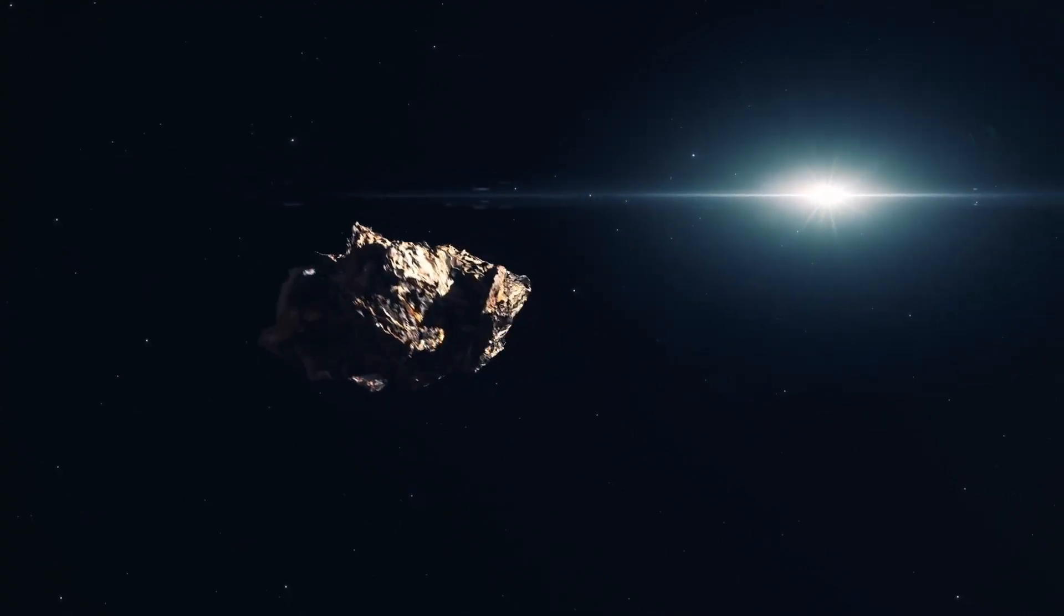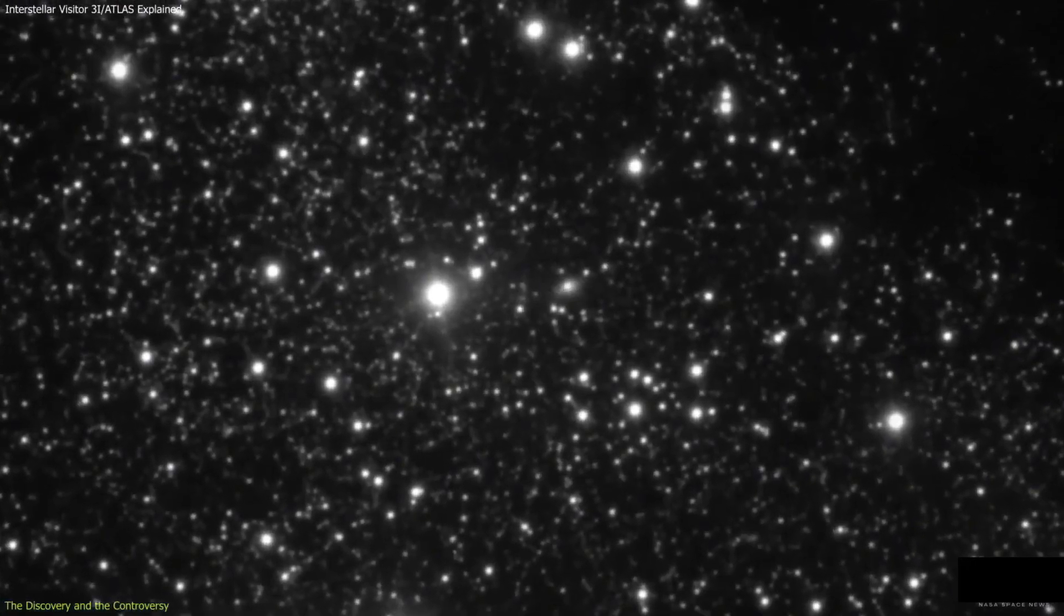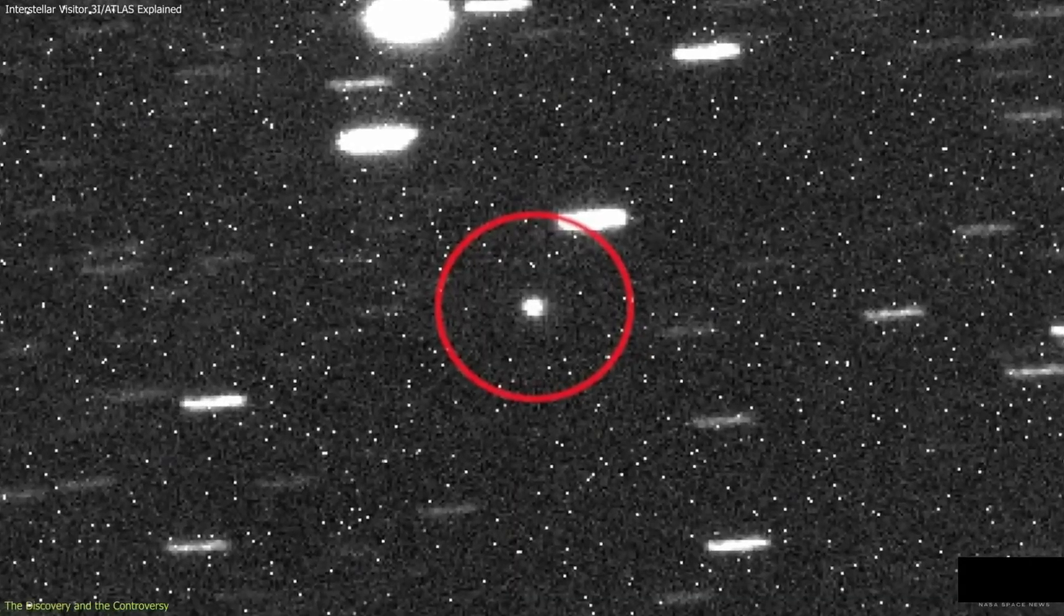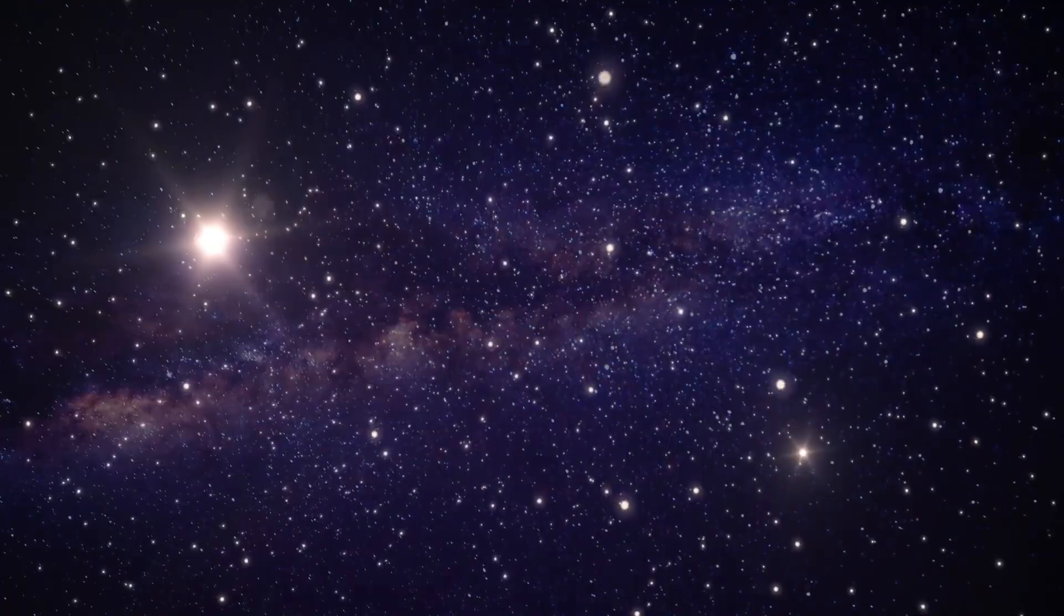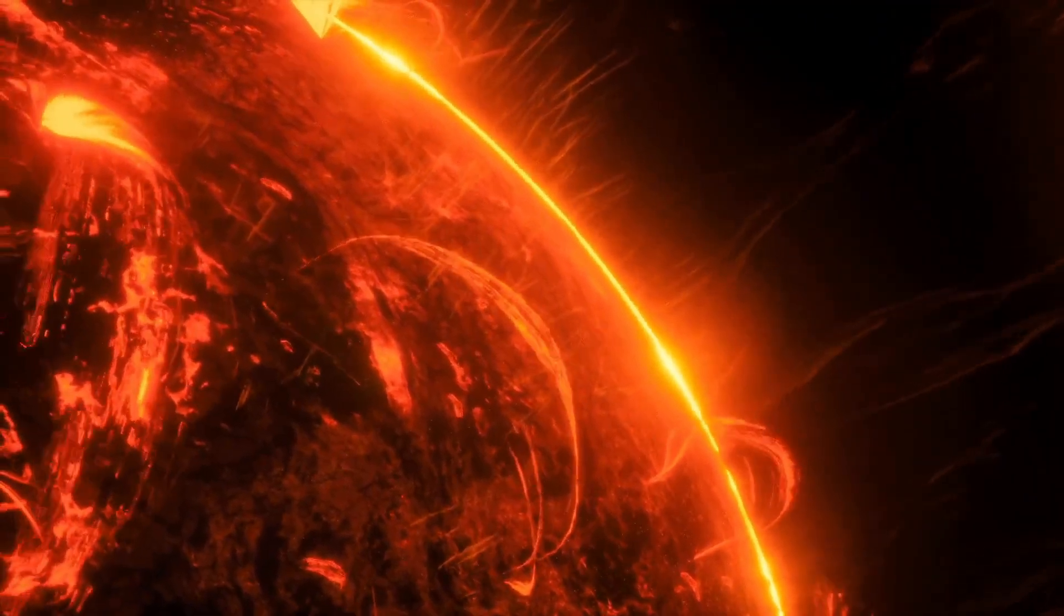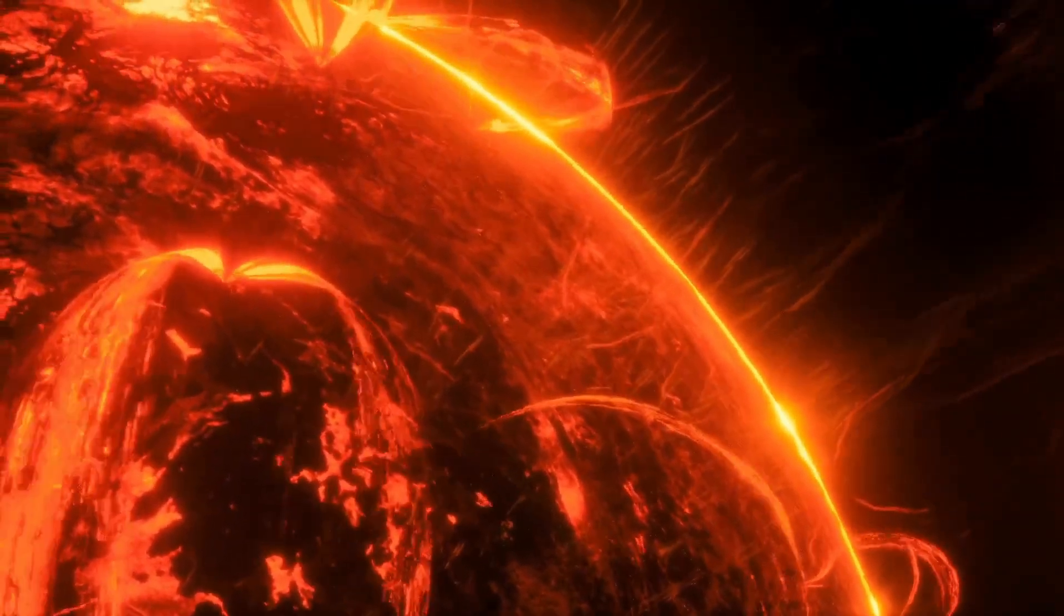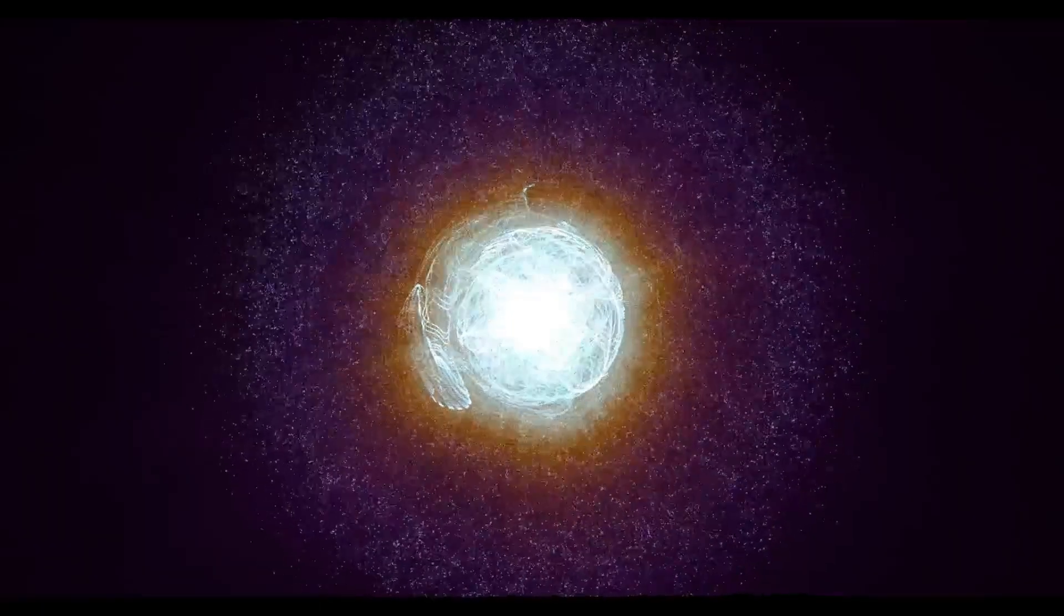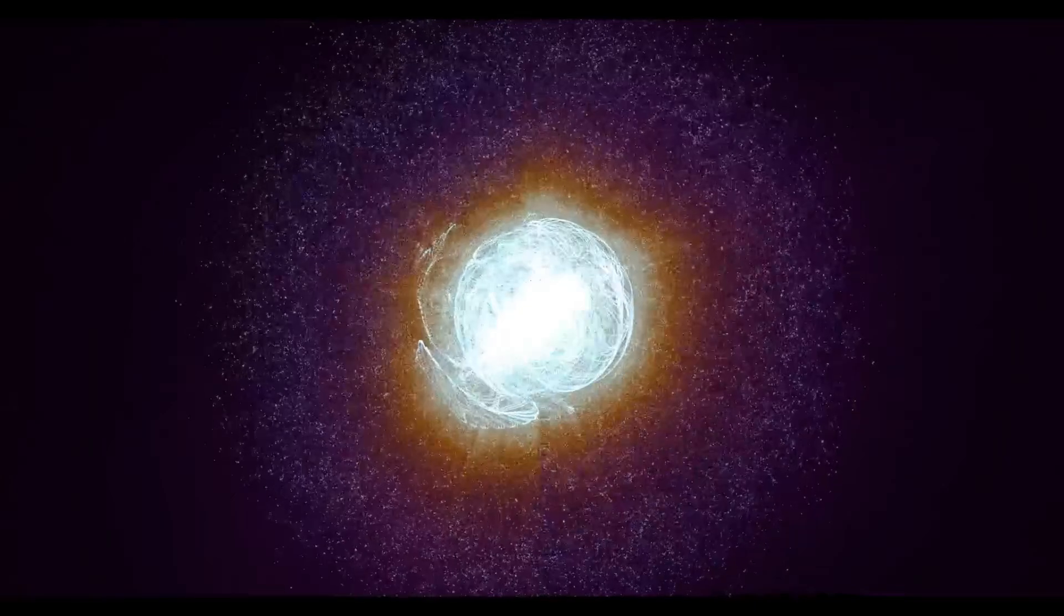This inversion contradicts established models of outgassing, which predicts that sublimating volatiles produce tails that stream outward under solar radiation pressure. If 3I Atlas were an icy body, its tail should trail behind its trajectory, not point sunward. The phenomenon suggests either a composition fundamentally different from that of ordinary comets, or a process of energy emission not driven by sublimation at all.